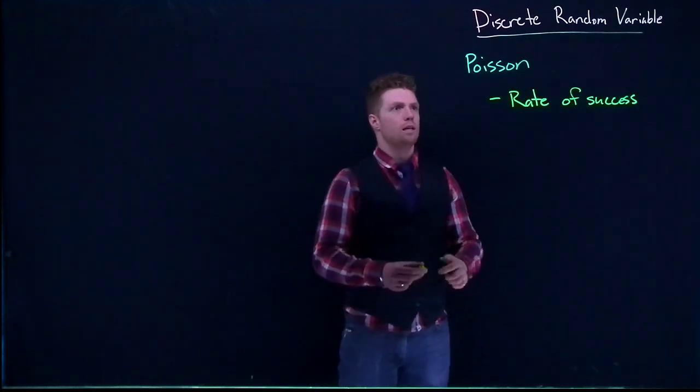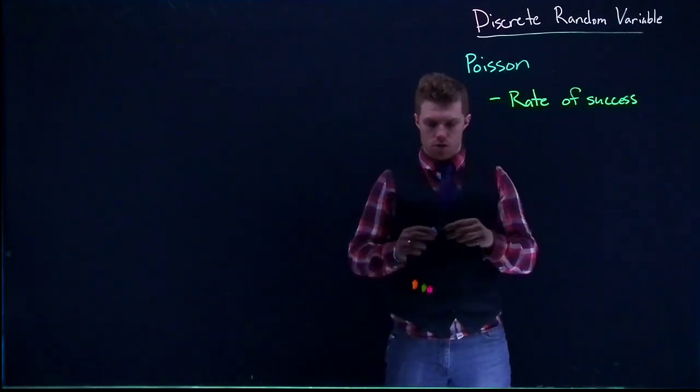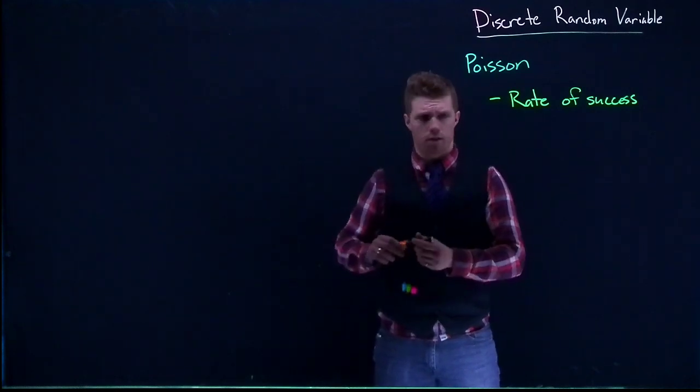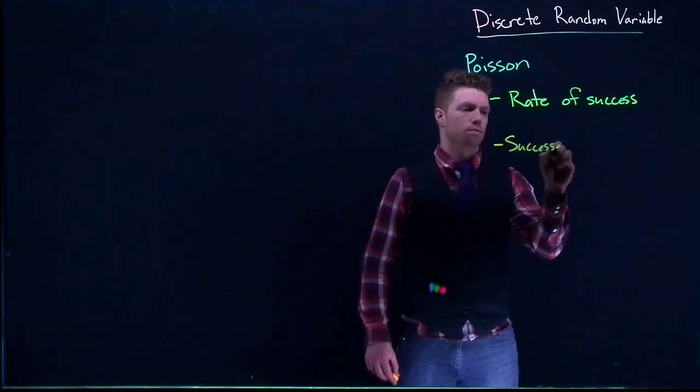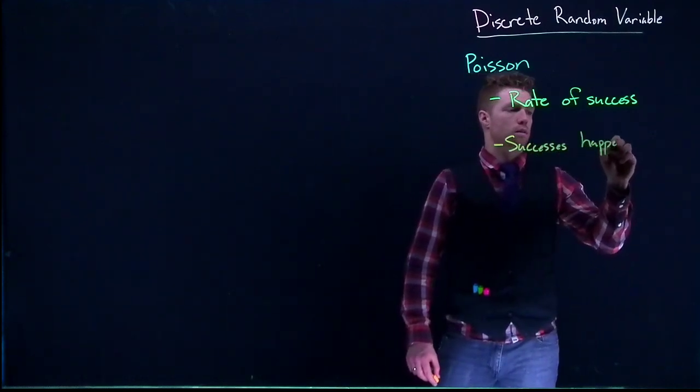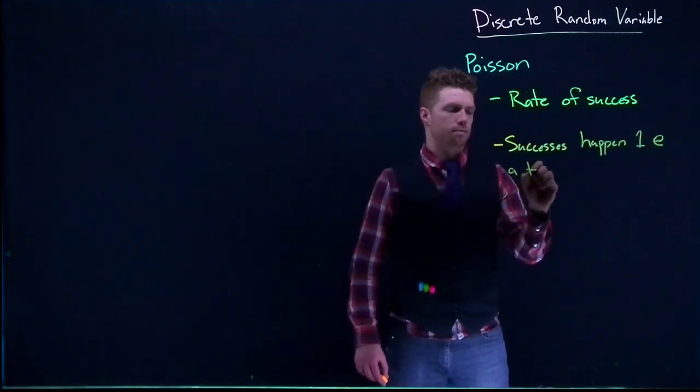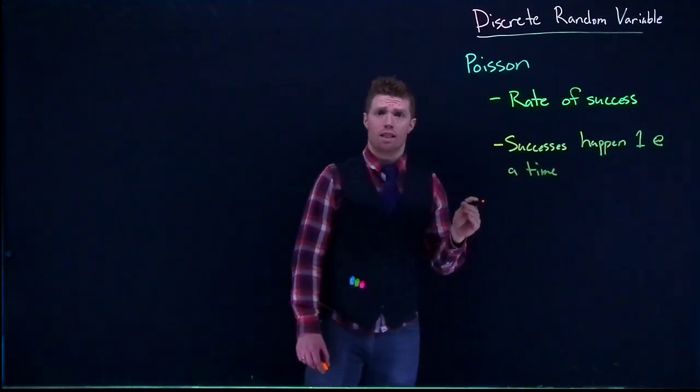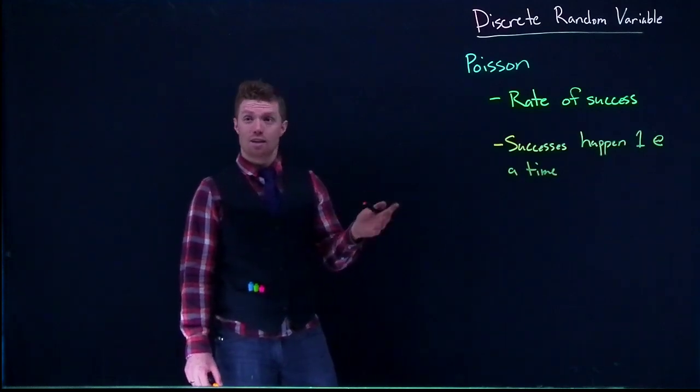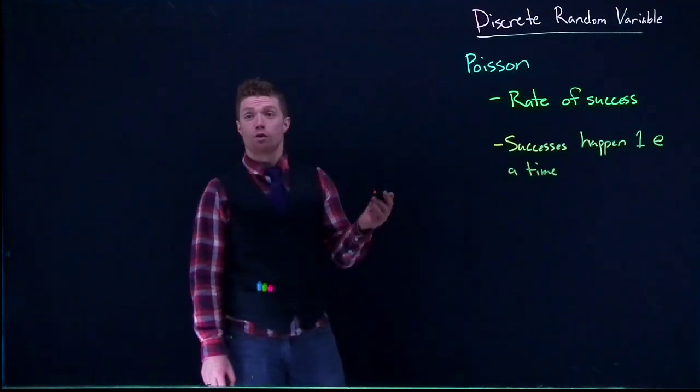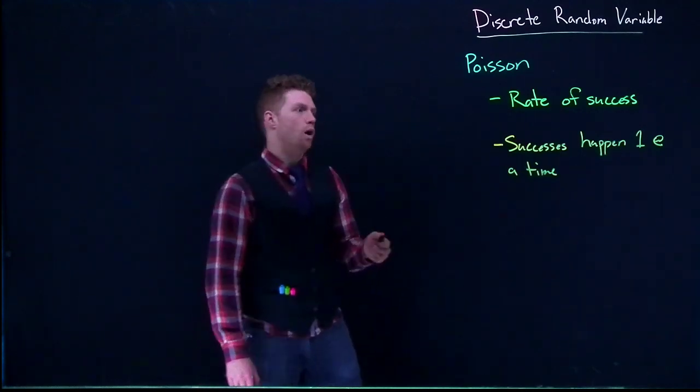So with this, some of the other rules that we need with our Poisson distribution is that our successes, number of people through the drive-thru or if a person comes through the drive-thru, successes happen one at a time. Now they can be really close together, like a hundredth of a second apart, but the successes have to happen one at a time. If they don't, we've got an issue. But like for the drive-thru example, the successes of the people coming through the drive-thru, that happens one at a time.